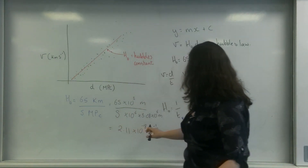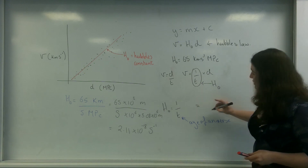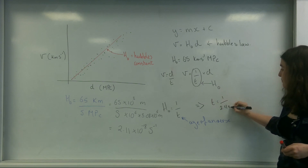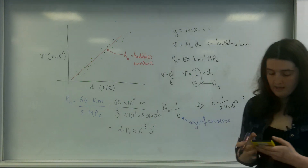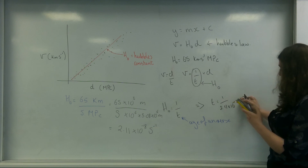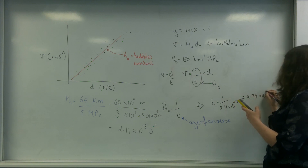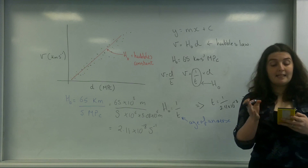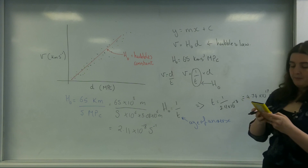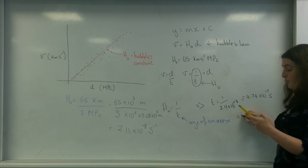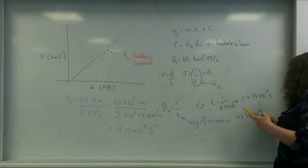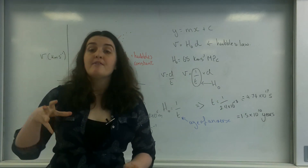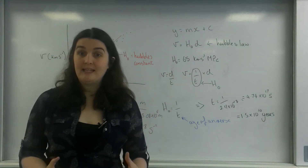Now if I take 1 over that value to get the time: t = 1 / (2.11 × 10⁻¹⁸) = 4.74 × 10¹⁷ seconds. Dividing by 60 to get minutes, 60 again for hours, 24 for days, and 365 for years, I get a value of 1.5 × 10¹⁰ years. So this is 15 billion years — Hubble's constant is telling me the universe has been around for about 15 billion years.